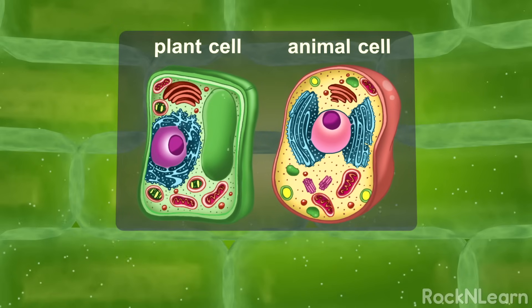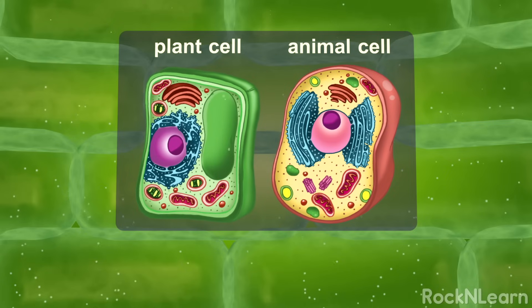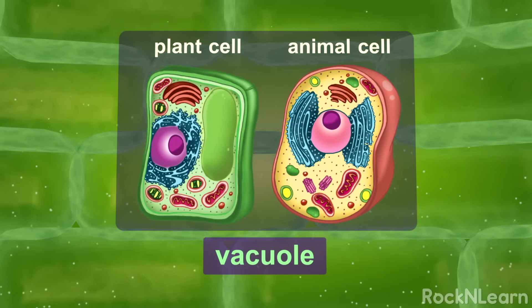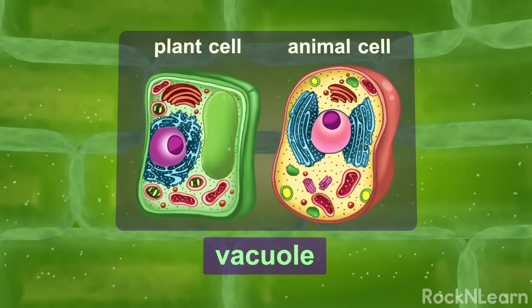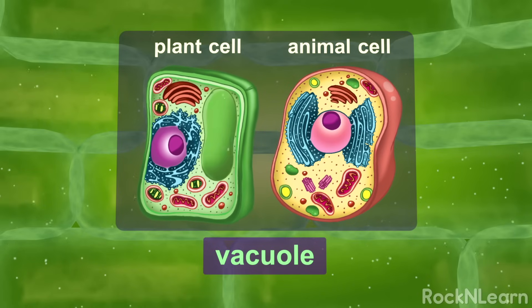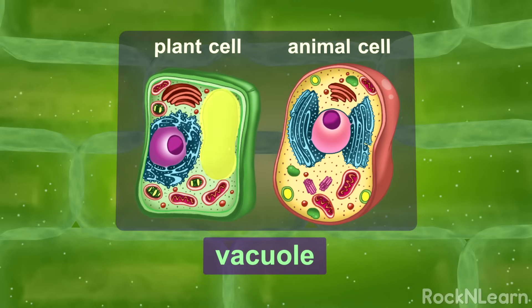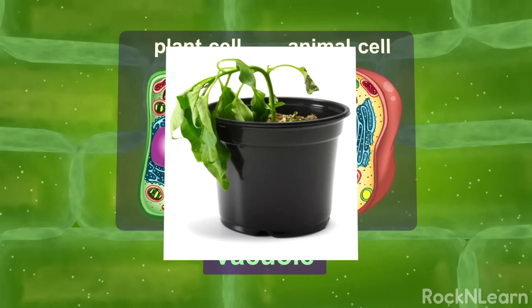Plants have one really large organelle called a vacuole that fills a big part of the cell. In a plant cell, the vacuole primarily holds water, but can also hold nutrients and waste. When a plant has too little water in its vacuoles, the plant wilts.